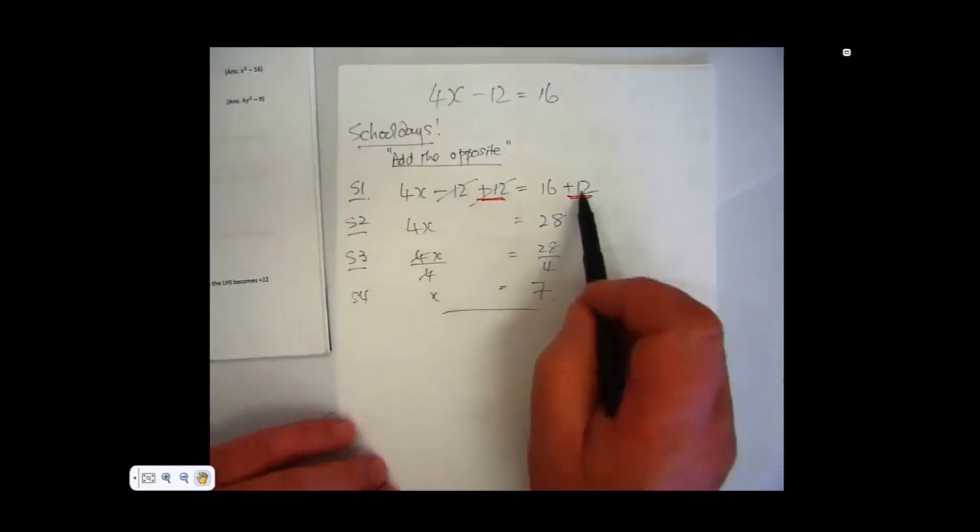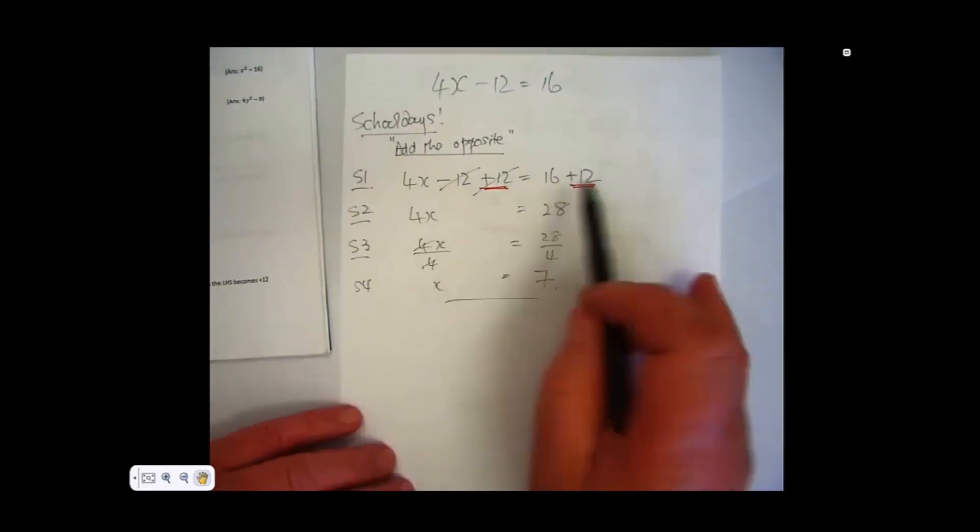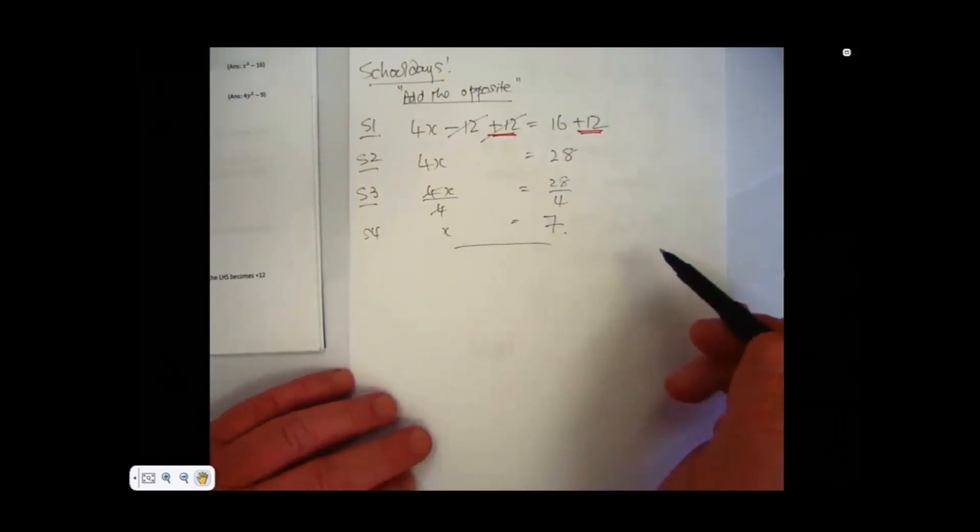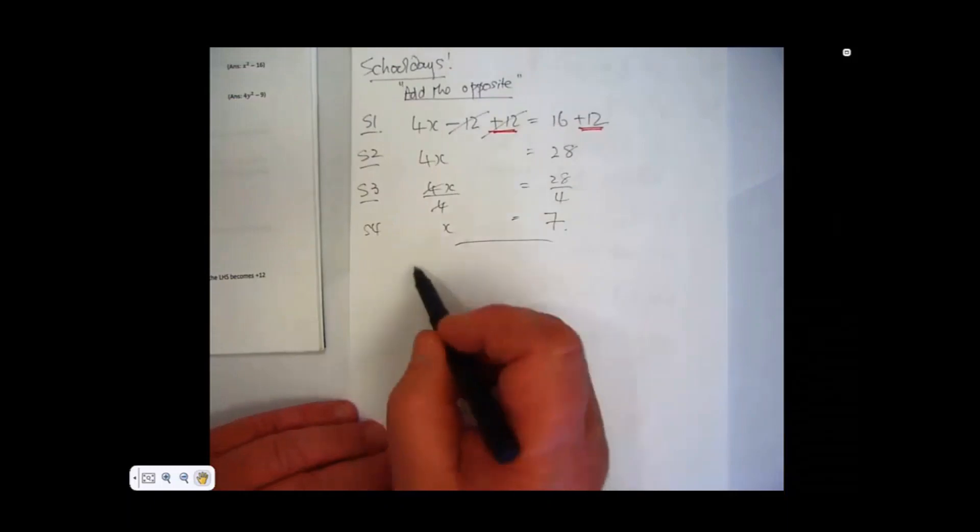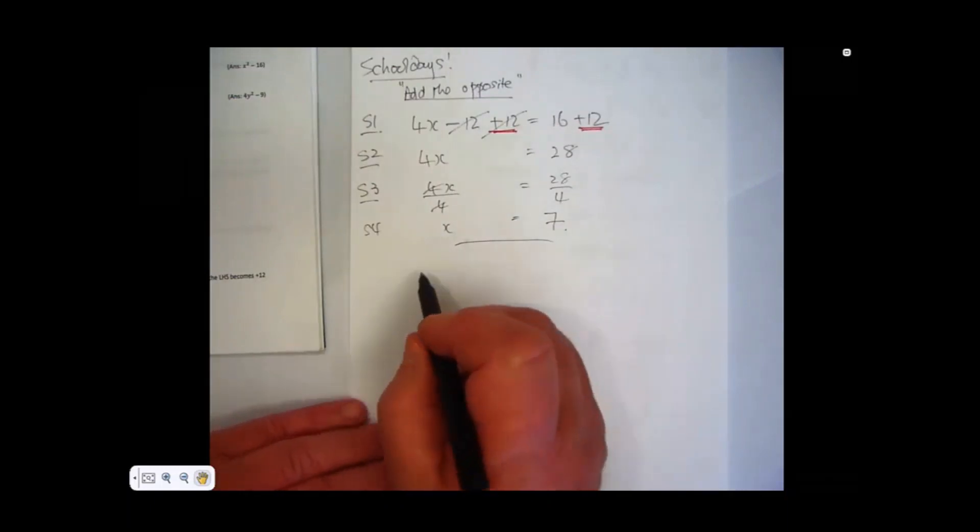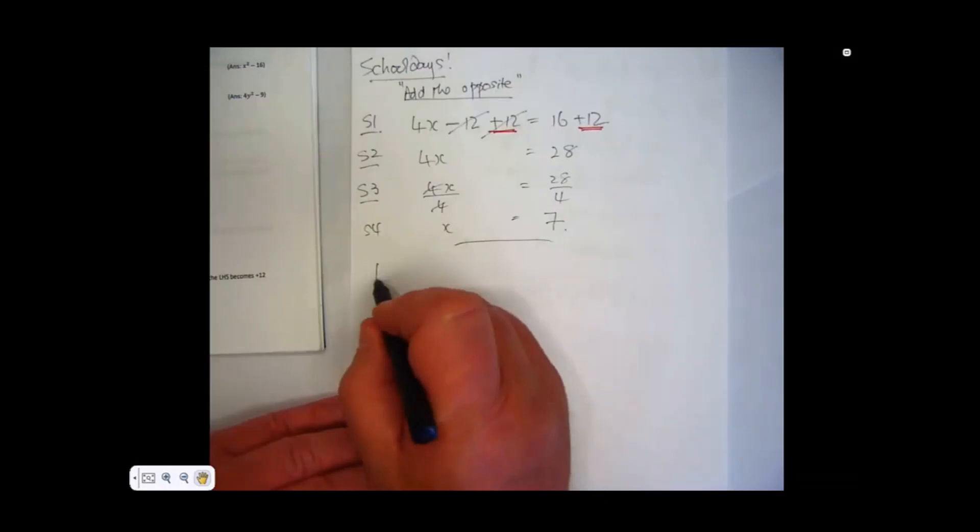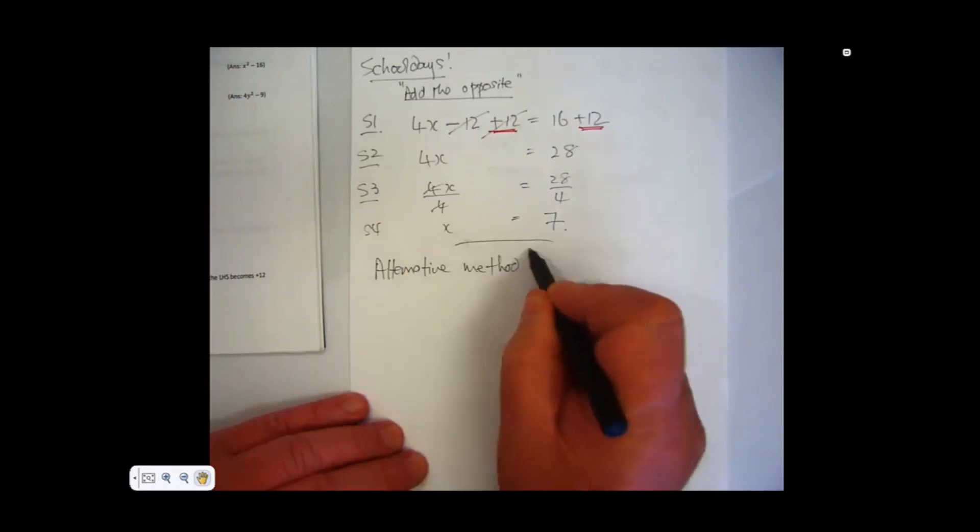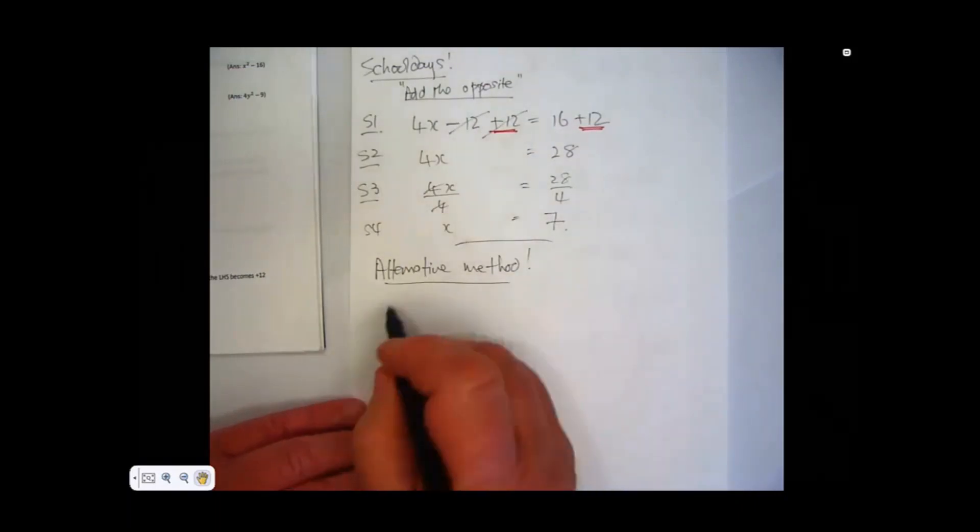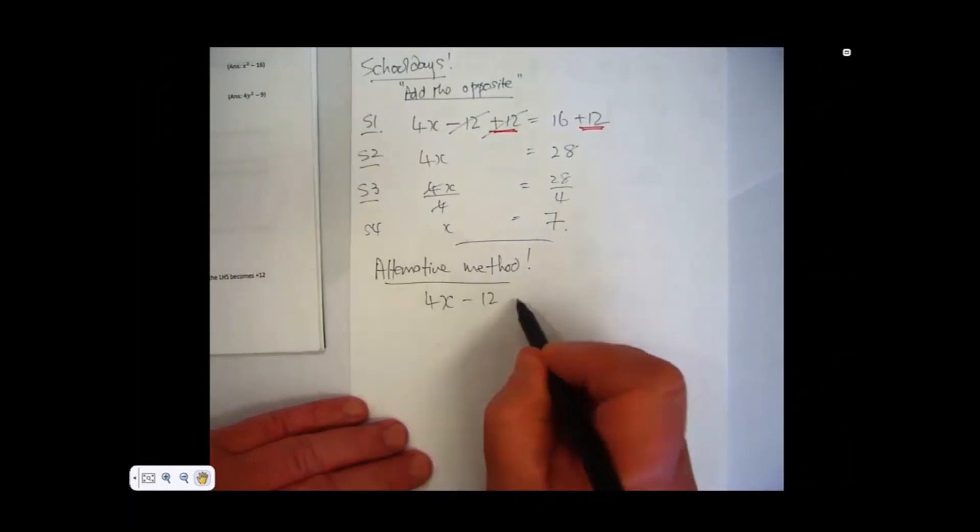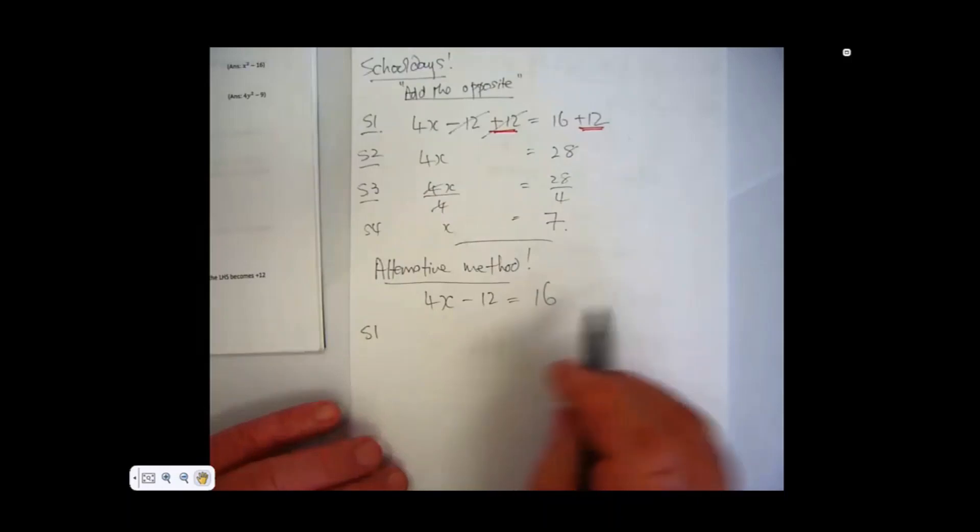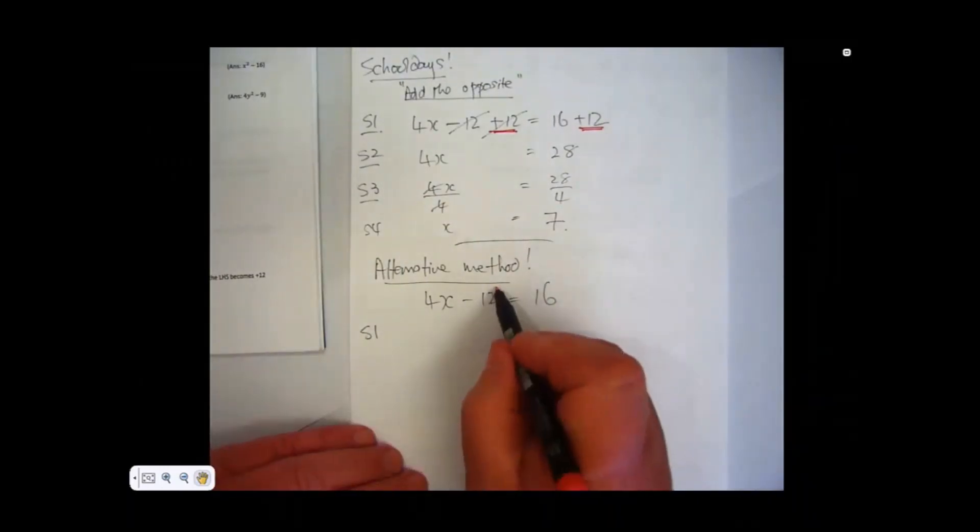This was the old fashioned way, very good, but a little bit slow. We want you to be a little bit quicker than this. So what we do now is use my little rule, and I'll show you this. This is really quick. It's the same thing. So we'll look at the alternative method. It gives the same answer, but much faster. And this is what we want. So here we go. 4x minus 12 equals 16. That's what we start with.